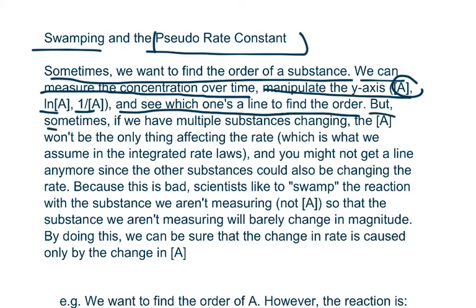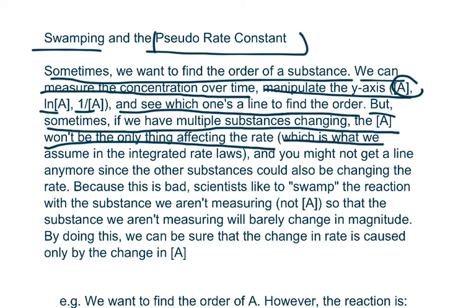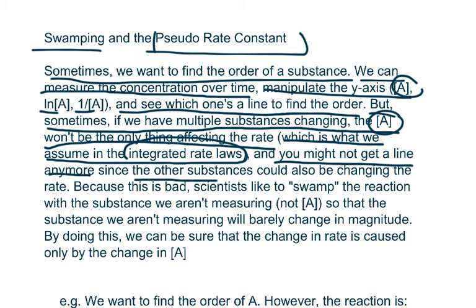But sometimes, if we have multiple substances changing, the concentration of A won't be the only thing affecting the rate. We assume that A is the only thing affecting the rate in the integrated rate laws. And because there are other things other than A that are affecting the rate, this means that you might not get a line anymore, since the other substances could also be changing the rate.